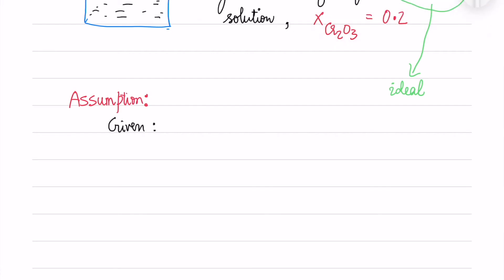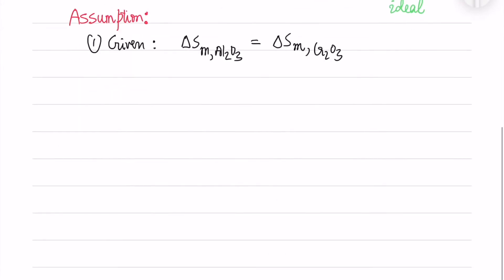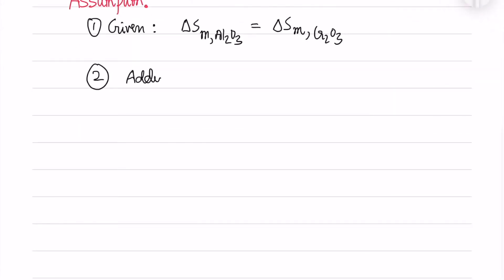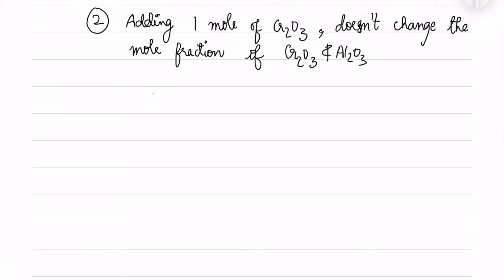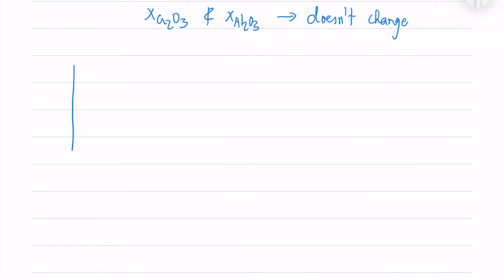I'll make two assumptions. First, it's given that the entropy of mixing of Al₂O₃ equals the entropy of mixing of Cr₂O₃. Second, I assume that adding one mole of Cr₂O₃ doesn't change the mole fraction of the solution. That means X_Cr₂O₃ and X_Al₂O₃ remain constant.